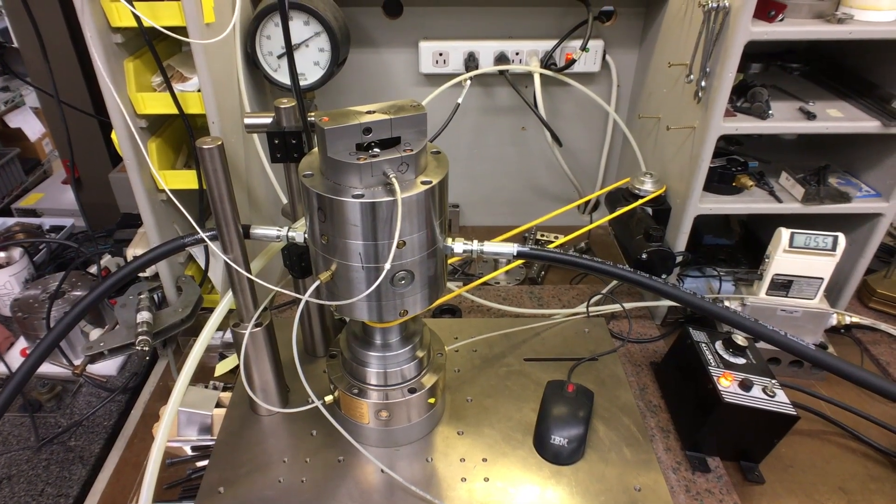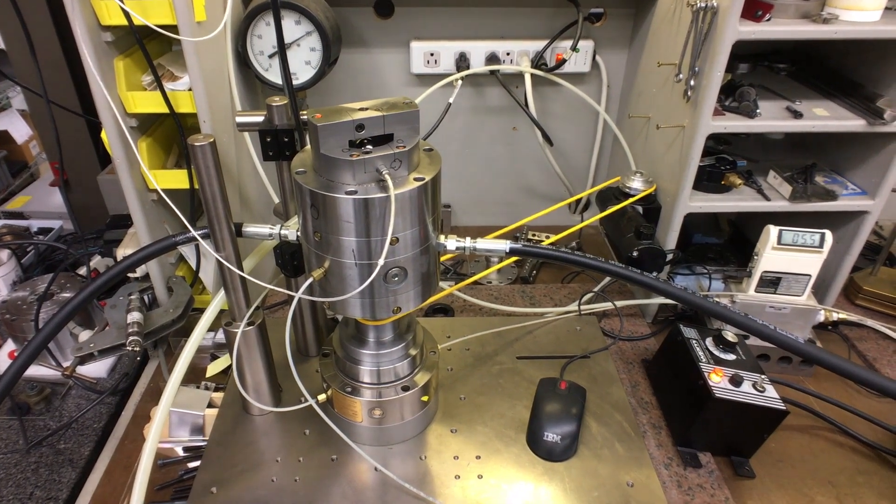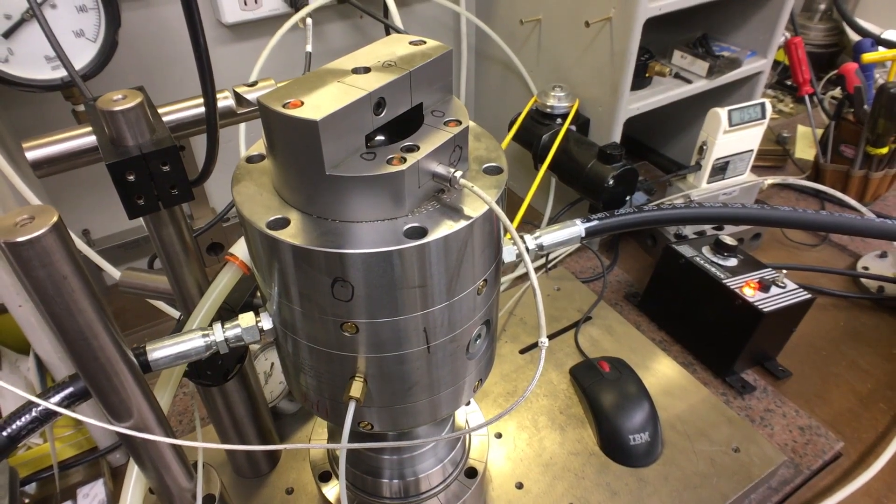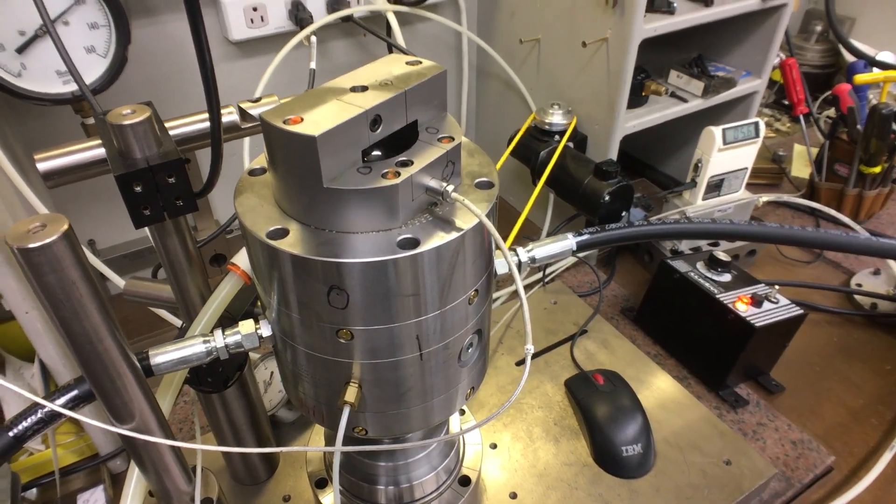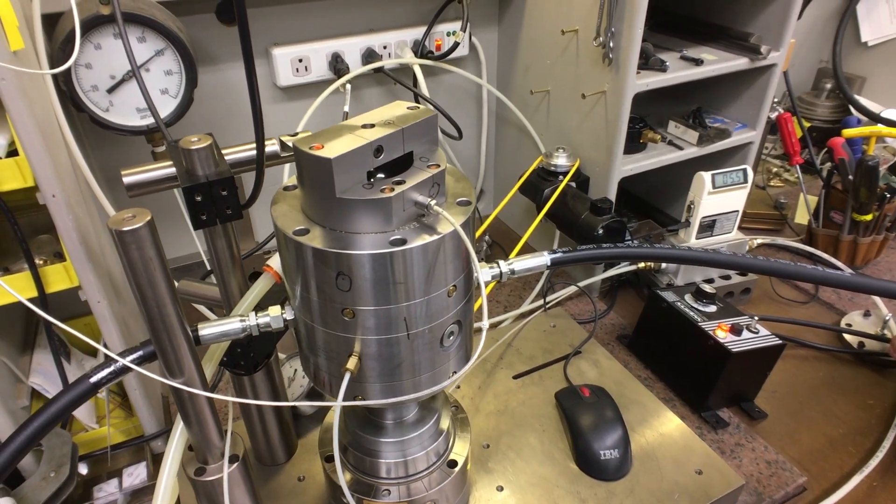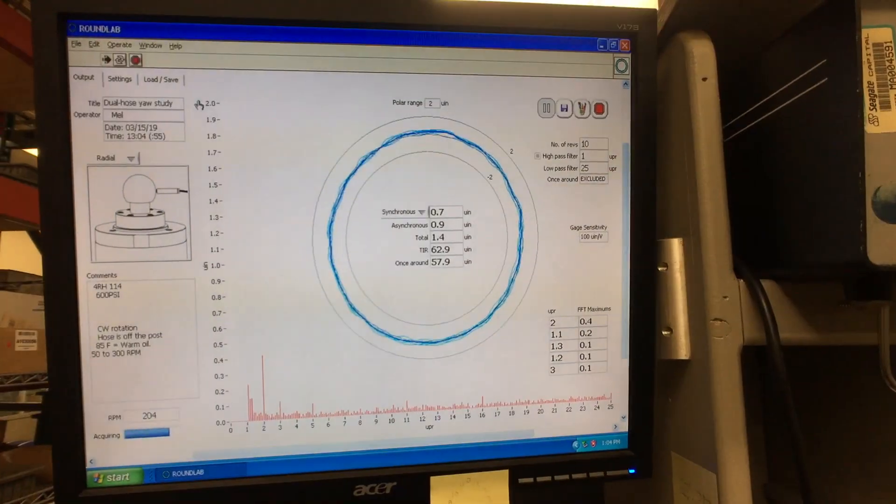If you look up at the top you'll see the test ball and the capacitive probe. We're spinning this by a belt drive motor, and the blockhead on the bottom has the encoder on it.